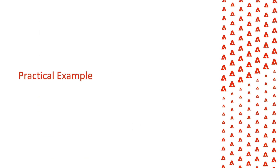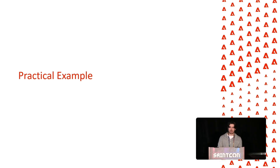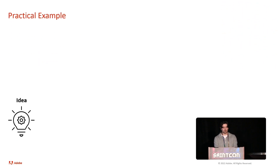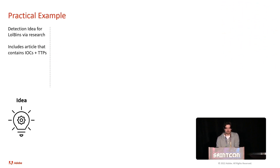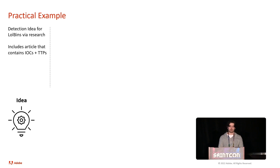That's a high-level overview of the detection engineering life cycle. Now we're going to apply that to a practical example. So we'll start out with an idea: let's say we had a detection idea for a binary — let's say certutil — performing process execution. We have an article that we read, maybe we saw this binary is more popular within a certain adversary, and the article also contains indicators of compromise — things we could see on the host indicating this adversary is using this binary — and tactic, techniques, and procedures the adversary is also using. We have all this data and want to translate it into an actionable alert.